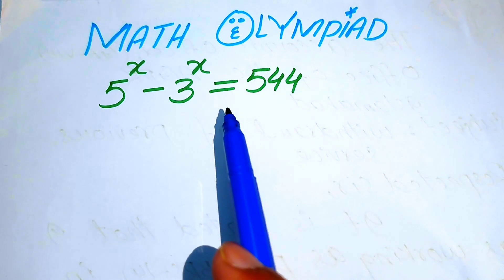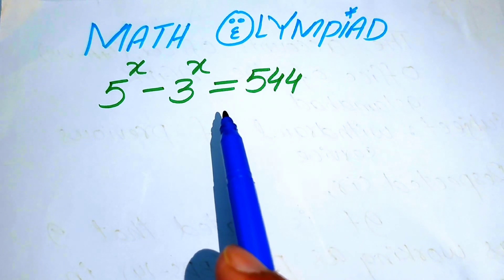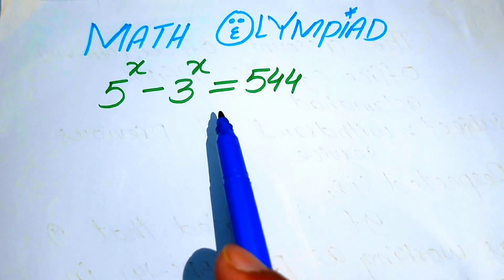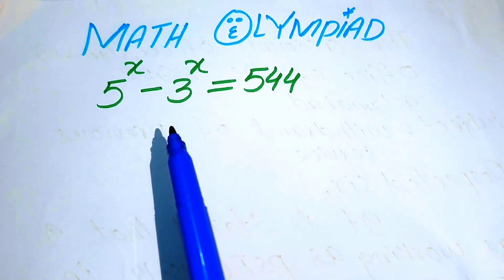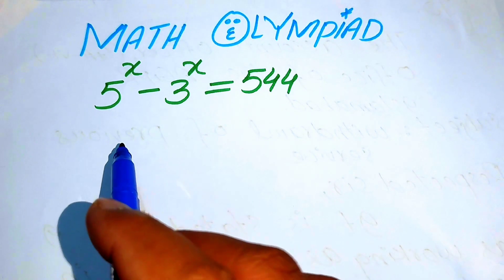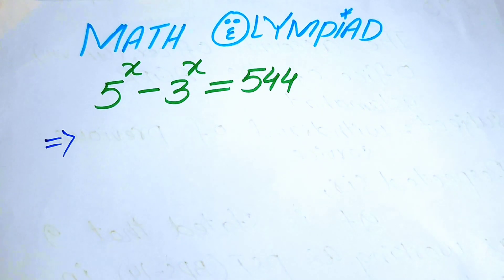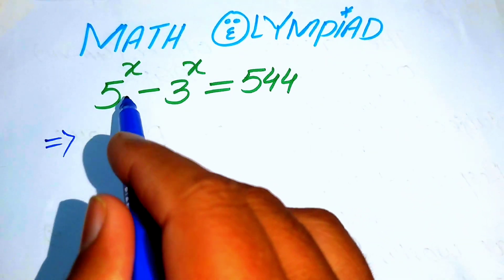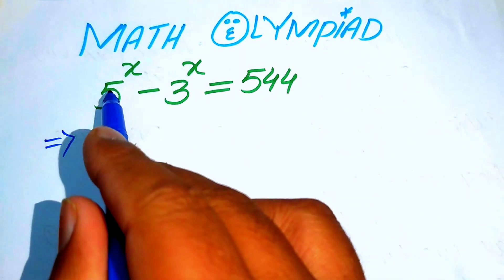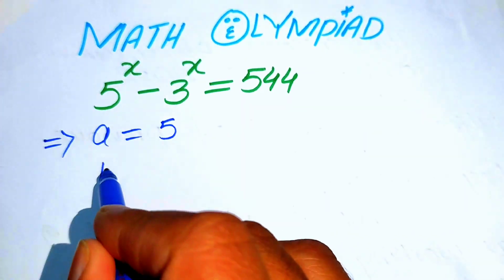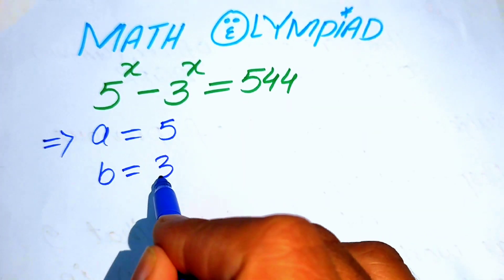In this question we introduce an interesting method known as the reverse engineering method. We solve this problem using the reverse engineering method. The very first step is we take the base of the first term equal to a, and we take the base of the second term equal to b.